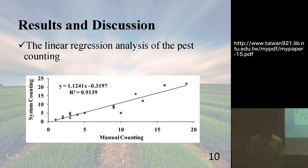And this is the linear regression analysis of the counting. This is the system counting and this is counting by the people, so we can see the people counting and the system counting, they have values that are very close, so that system can help people counting.